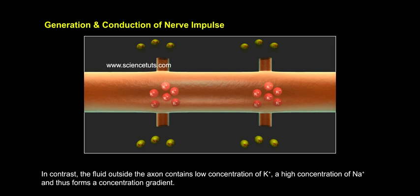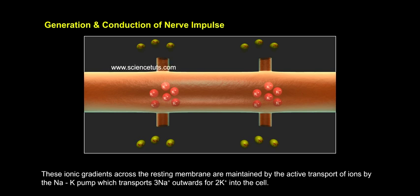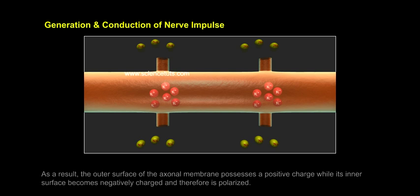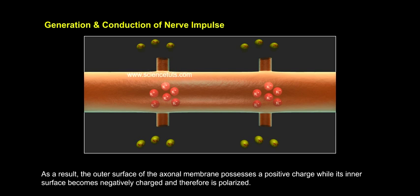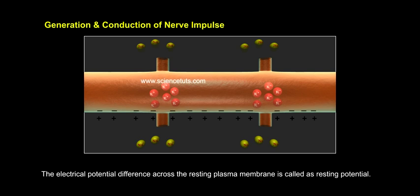This forms a concentration gradient. These ionic gradients across the resting membrane are maintained by the active transport of ions by the Na-K pump, which transports 3 Na+ outwards for every 2 K+ into the cell. As a result, the outer surface of the axonal membrane possesses a positive charge, while its inner surface becomes negatively charged and therefore polarized. The electrical potential difference across the resting plasma membrane is called the resting potential.